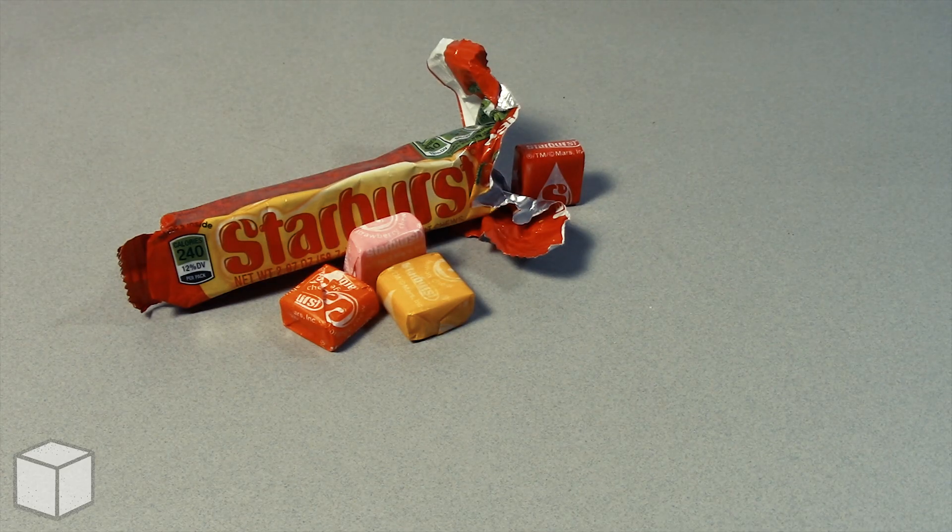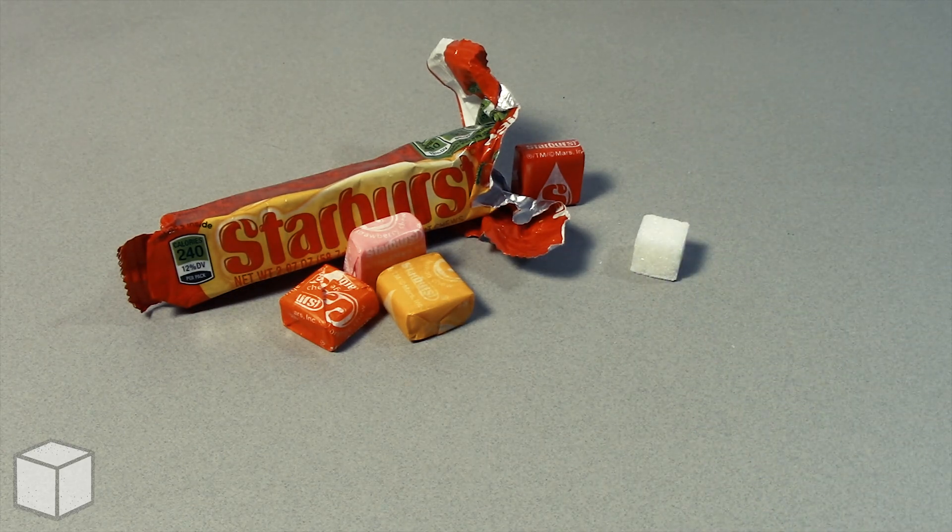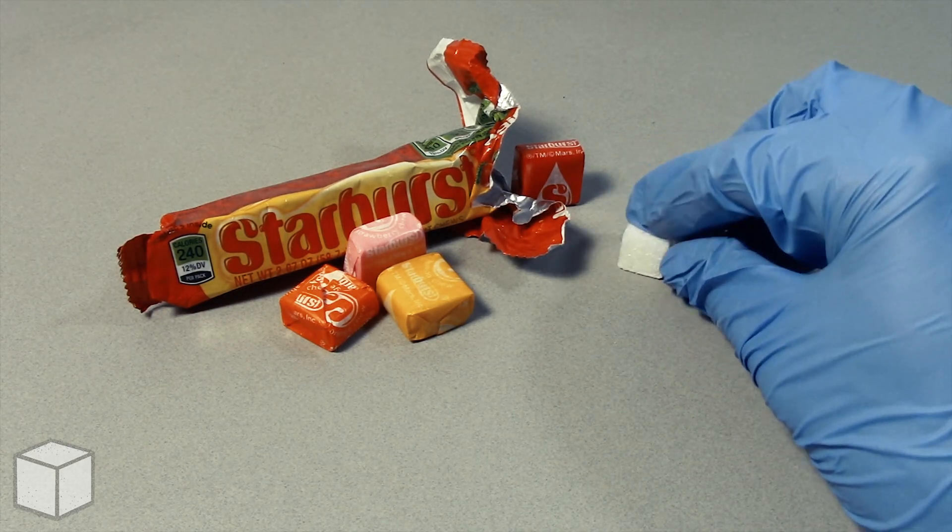So in conclusion, this Starburst original candy is loaded with around 14 cubes of sugar.